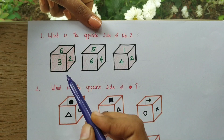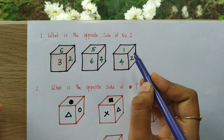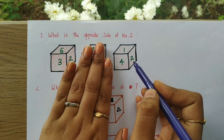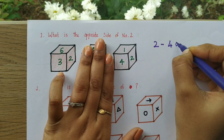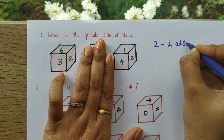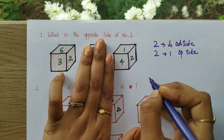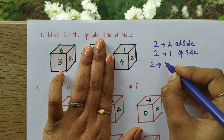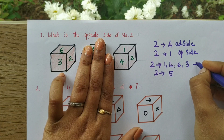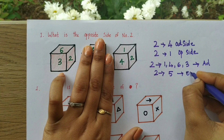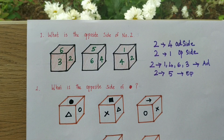Let's move to the problem — they're asking what is the opposite side of number two. We can see the cube here and two is visible. Two will have four adjacent sides. The adjacent sides of two are: one, four, six, and three. So definitely those are adjacent sides, and the remaining one will be the opposite side.